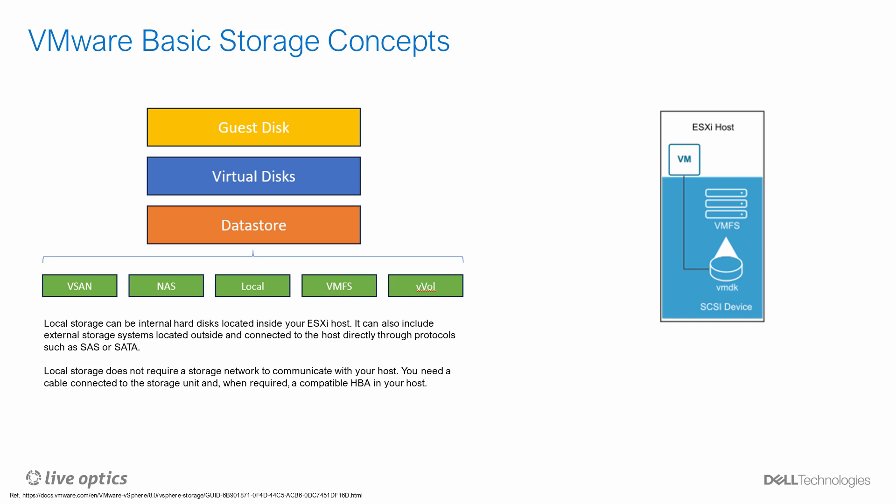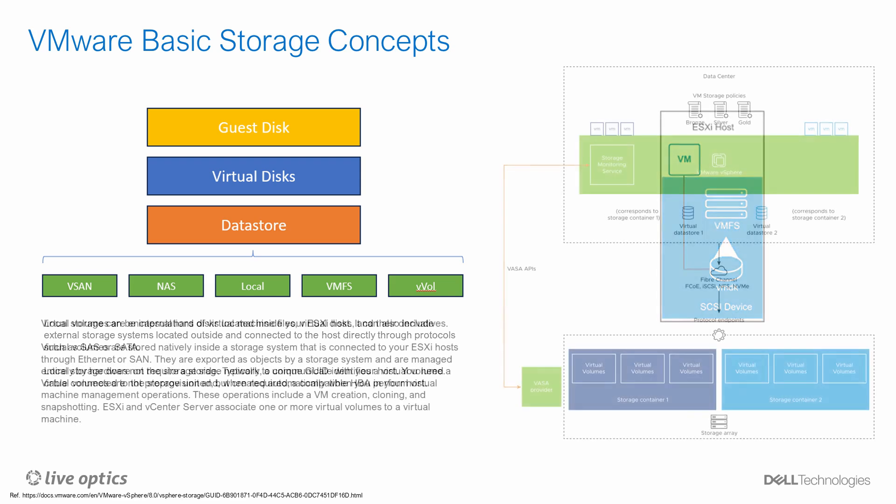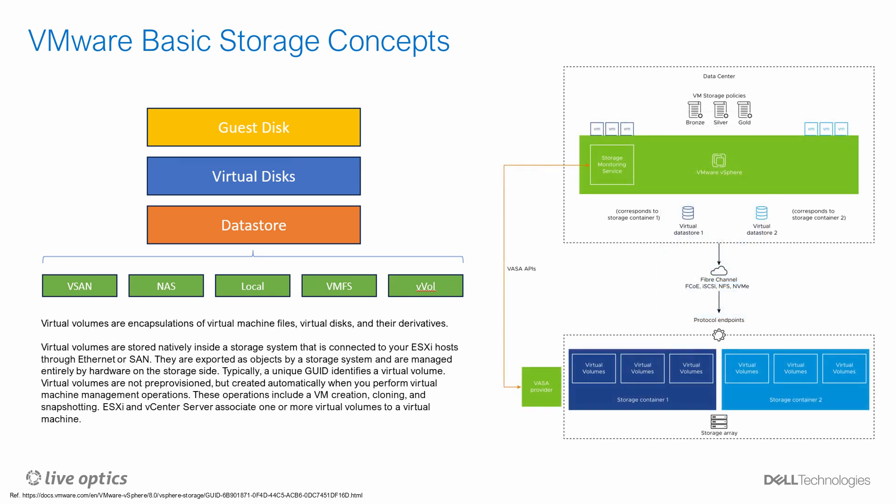Because local data stores cannot be used in highly available configurations or shared across nodes in the cluster, they are generally not used in production environments, and storage associated with local data stores is often ignored. Virtual Volume, also known as V-Vol, is less frequently used. V-Vol data stores have direct integration with storage arrays via a storage area network connection and were designed to get around limits restricting the number of SAN LUNs connectable to an ESXi host. The presence of V-Vols requires that an external storage array is present.